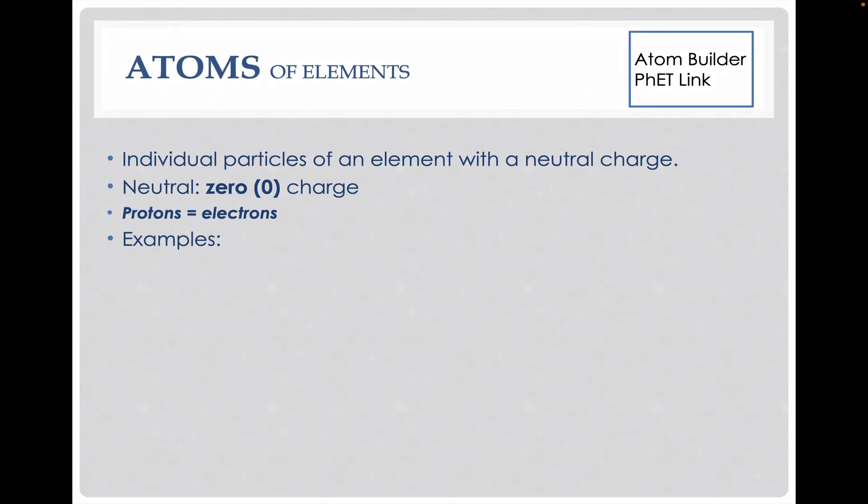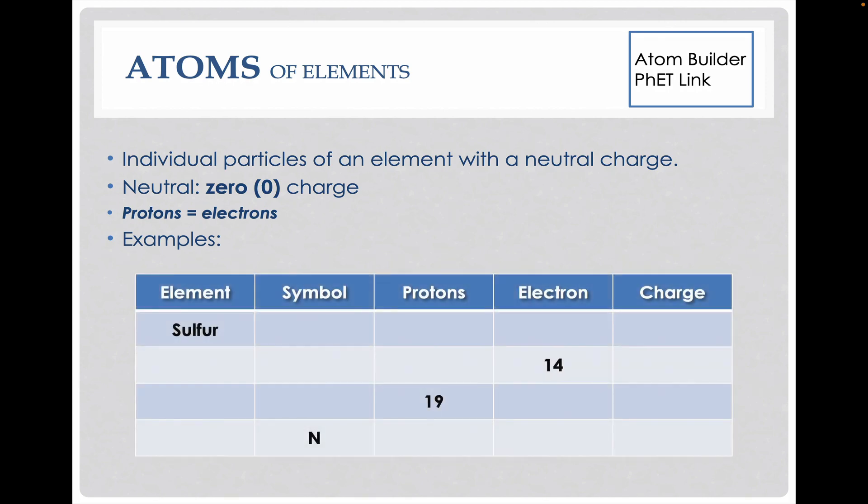Now when we talk about our different substances, we need to break it down into two different categories. We have atoms, and atoms are going to have zero charge, which means the protons have to equal the electrons. If we take a look at our different elements, we can figure out symbols, protons, electrons, and charge based off of what it is, how many electrons we have, how many protons we have, or the symbol. So if we have any of these pieces of information, we actually can fill in the rest.